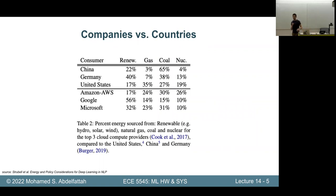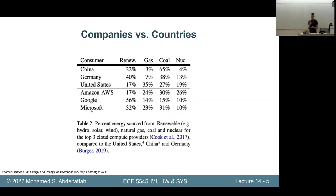Where does the energy come from? Depending on where you put your data center, you have a very different mix of renewable energy versus nuclear versus coal and gas. People have made comparisons of these countries versus machine learning-focused companies that use a lot of this energy — it's a way to gauge the environmental consciousness of these companies versus various countries.